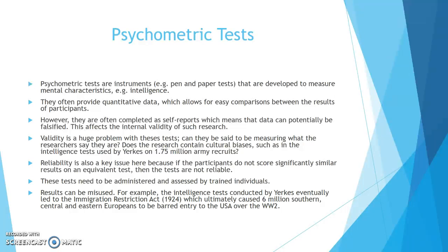These tests need to be administered and assessed by trained individuals. If the results get into the wrong hands, they can be misused. For example, the intelligence tests conducted by Yerkes eventually led to the Immigration Restriction Act 1924, which ultimately caused 6 million Southern, Eastern and Central Europeans to be barred entry to the USA over World War II.